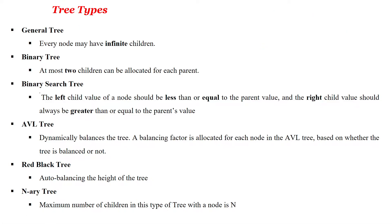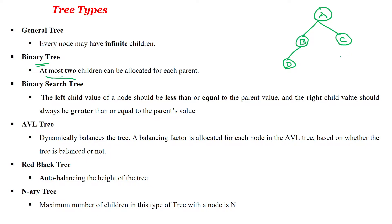So that kind of tree where any node may have an infinite number of children is called a general tree. The next type is the binary tree. In a binary tree, each node will have at most two children. Node A should have at most only two children. Any parent should not have more than two children — at most two children.